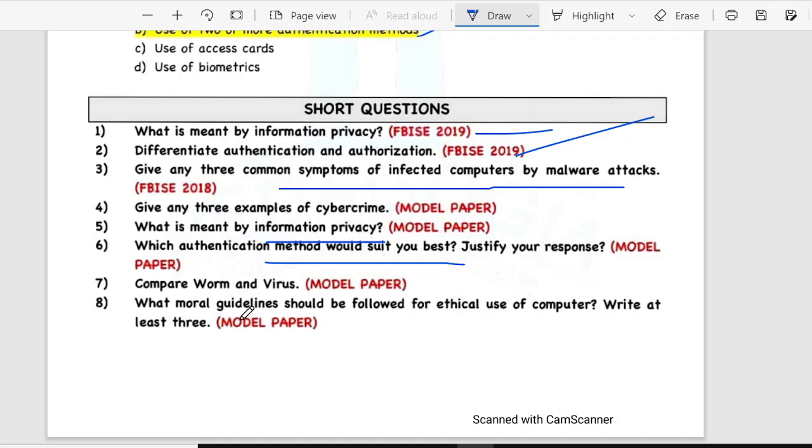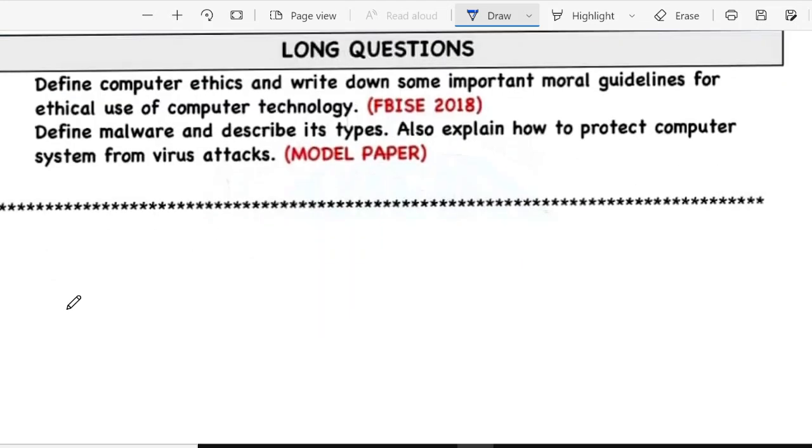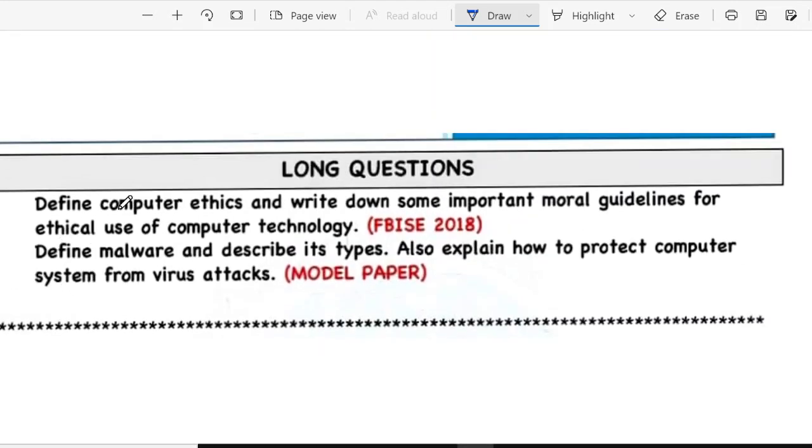Seventh is compare worm and virus. Eight is what moral guidelines should be followed for ethical use of computer? Write at least three. Long question is define computer ethics and write down some important moral guidelines for ethical use of computer technology. And last, define malware and describe its types and explain how to protect computer system from virus attacks.